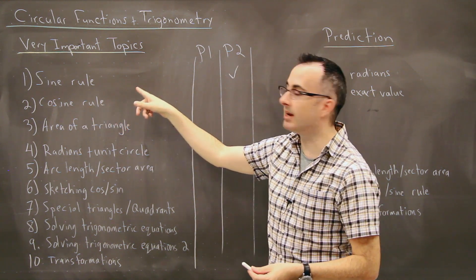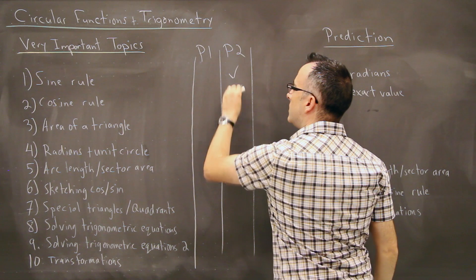Cosine rule gets a little bit more complicated, but again, it's what you do for non-right angle triangles. Again, paper two.